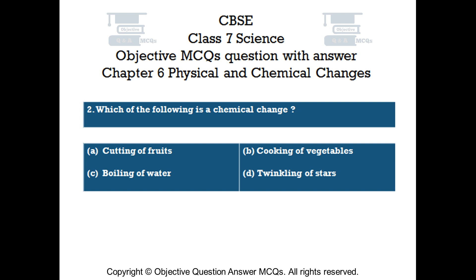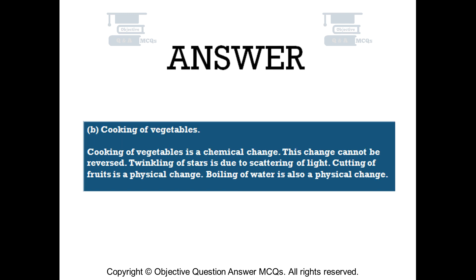The right answer is Option B: Cooking of Vegetables. Cooking of vegetables is a chemical change — this change cannot be reversed. Twinkling of stars is due to scattering of light. Cutting of fruits and boiling of water are both physical changes.